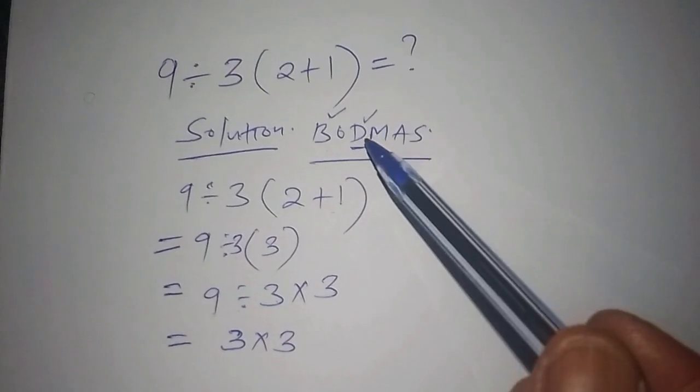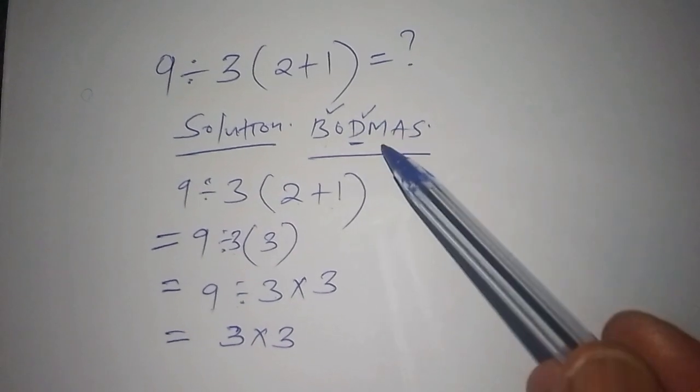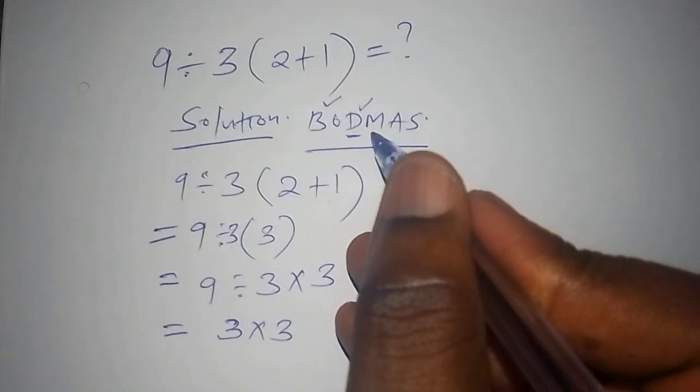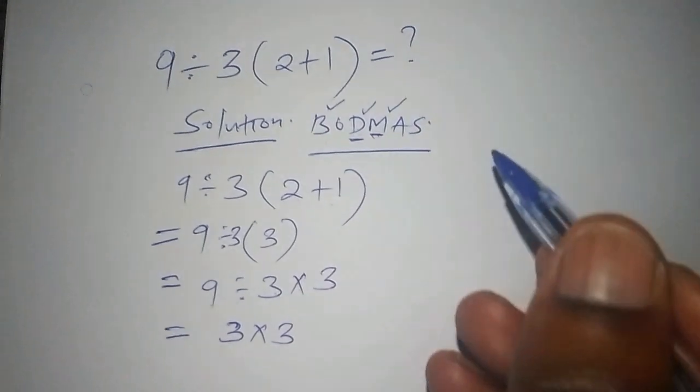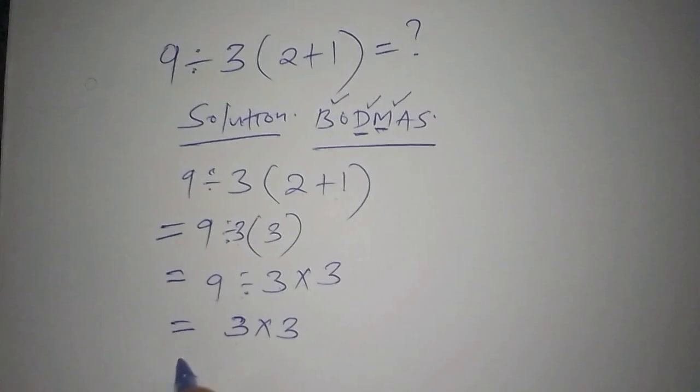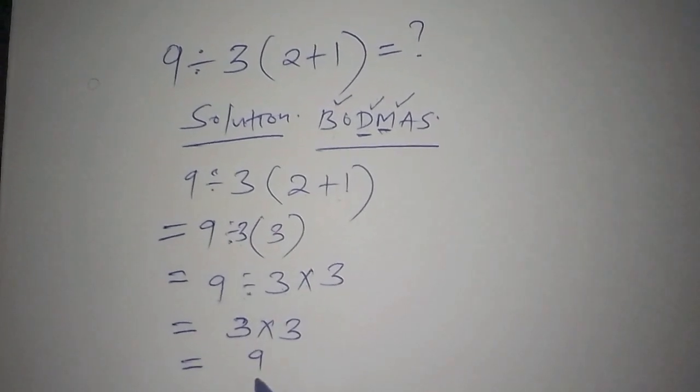Finally, we have the multiplication, that is M. Our final answer becomes 3 multiplied by 3, and 3 multiplied by 3 is 9.